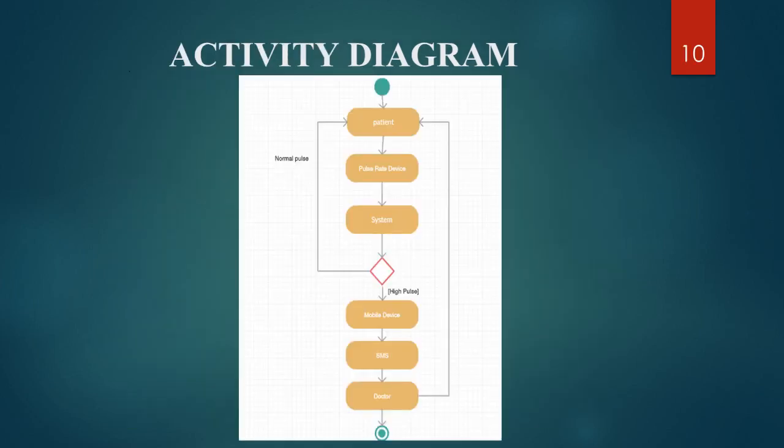The next point is the activity diagram. The patient is connected to the pulse rate device. The pulse rate device is connected to the system. When the patient has a normal pulse rate, a message is sent to the mobile device via SMS to the doctor and relatives. When the pulse rate is high, a message is sent to the doctor and relatives indicating the pulse rate is high.